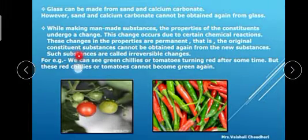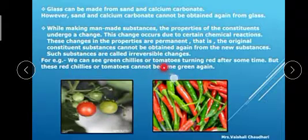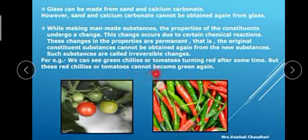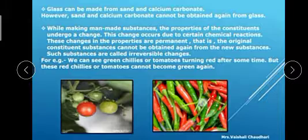For example, we can see green chilies or tomatoes turning red after some time. But these red chilies or tomatoes cannot become green again. Now you can see the green chilies turn into red, but red chilies do not turn into green.